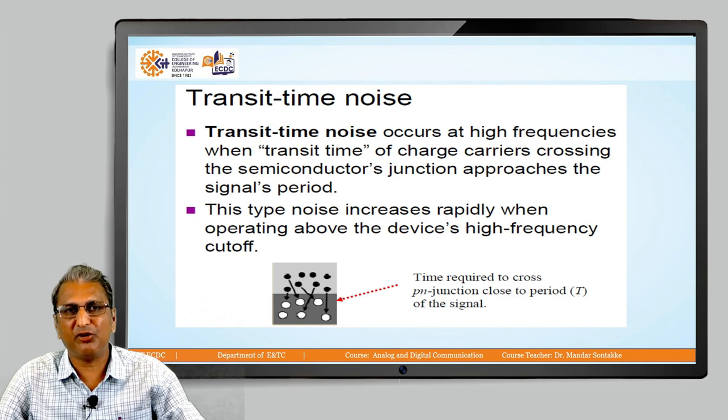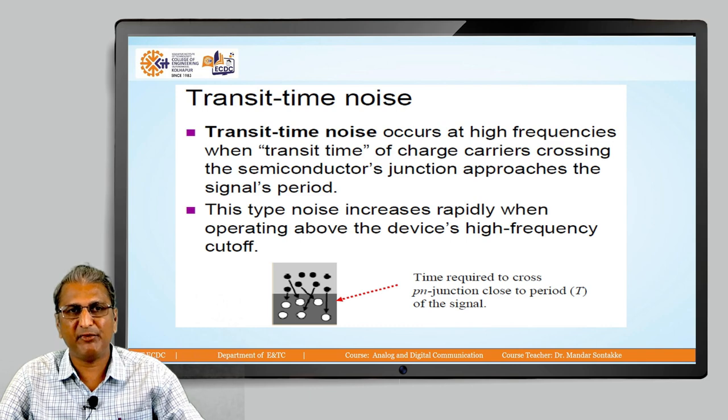Transit time noise occurs at high frequencies when the transit time of charge carriers crossing the semiconductor junctions approaches the signal's period. This type of noise increases rapidly when operating above the device high frequency cutoff. Time required to cross p-n junction is close to the period T of the signal.